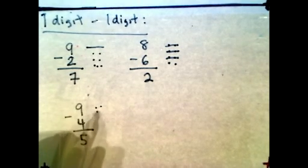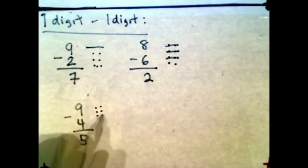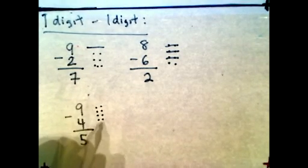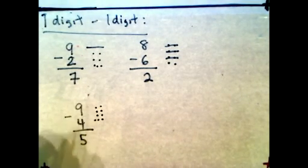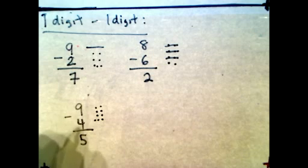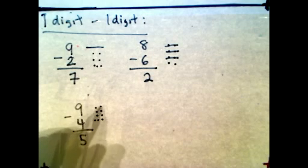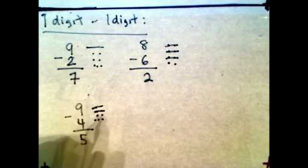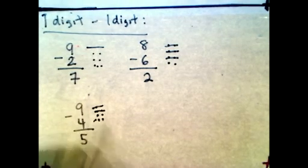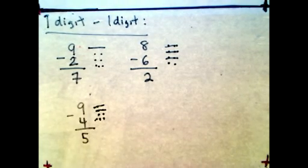So 1, 2, 3, 4, 5, 6, 7, 8, and 9. Get rid of 4: cross out 1, 2, 3, 4. So what's left? 1, 2, 3, 4, 5. It means 5.